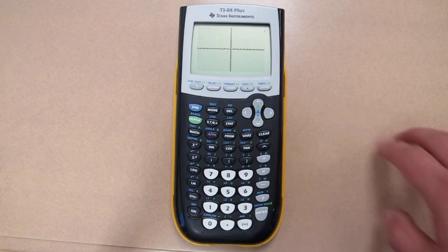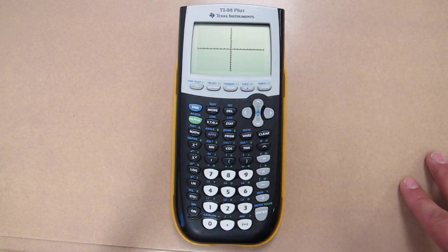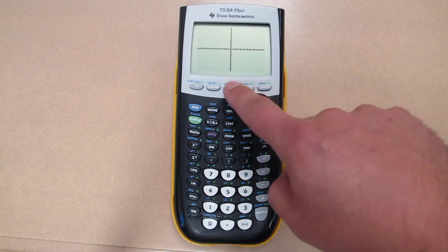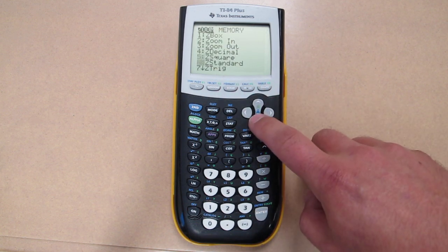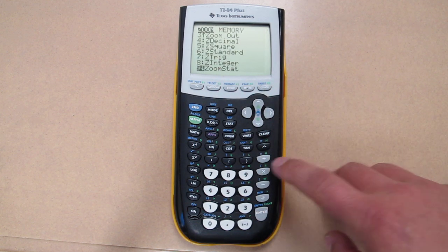Now when you push graph, you should see nothing. That's because the zoom is incorrectly set. Press zoom and scroll down to the 9th option, or just press 9.